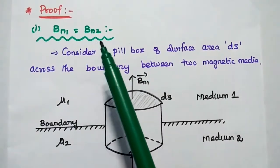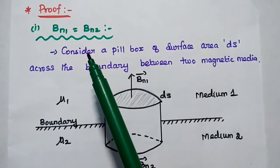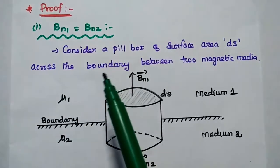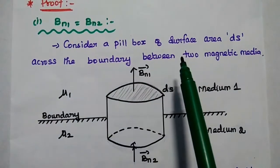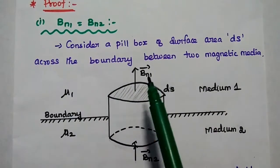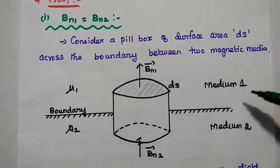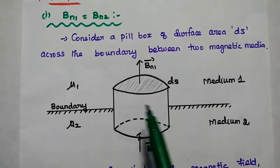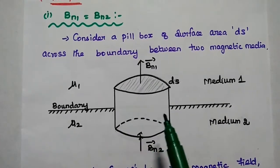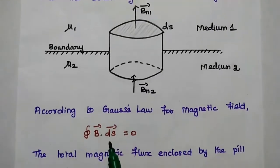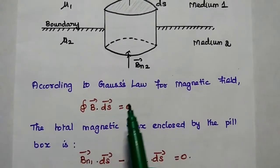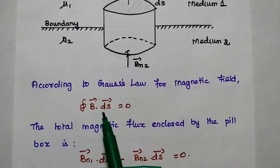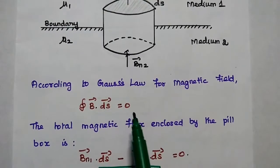The first condition to prove is BN1 is equal to BN2 — that is, the normal component of magnetic flux density is continuous across the boundary line. For that, we consider a pillbox of surface area DS across the boundary between two magnetic media. Here we consider medium 1 and medium 2 with permeabilities mu1 and mu2. This is the boundary line, and we are going to construct this pillbox at this boundary line. We will use Gauss's law for magnetic field.